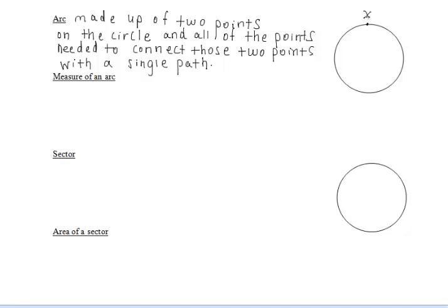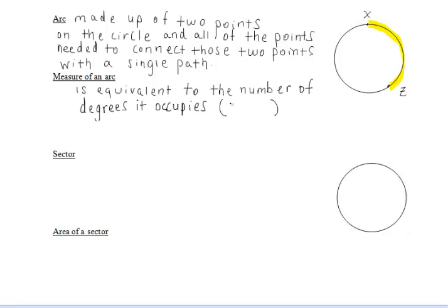An arc of a circle is made up of two points on the circle and all of the points needed to connect those two points with a single path. So an example of an arc would be arc xz over to the right. The measure of an arc would be equivalent to the number of degrees that it occupies. So we think measure and degrees go together. All the way around a circle we know that it's 360 degrees.